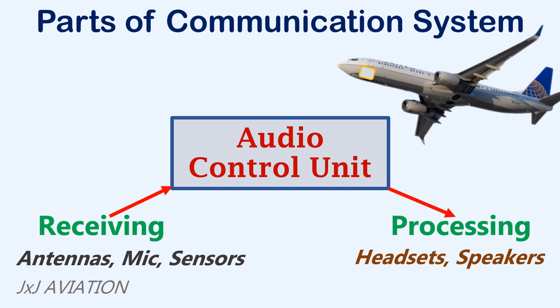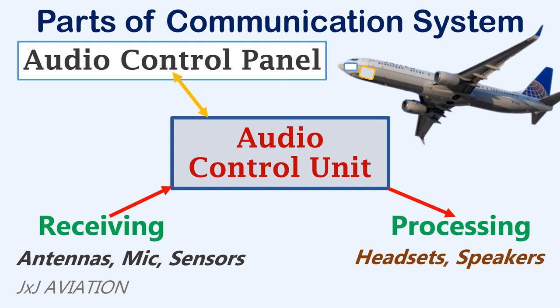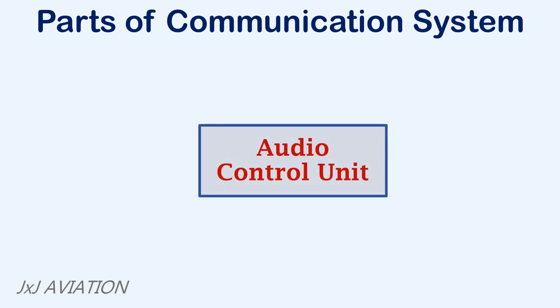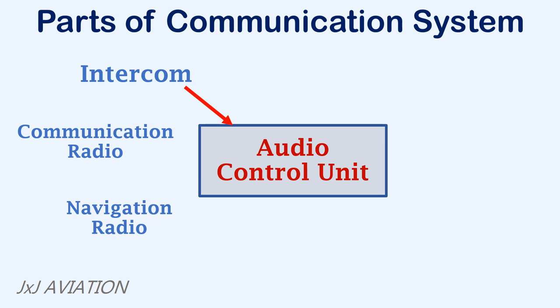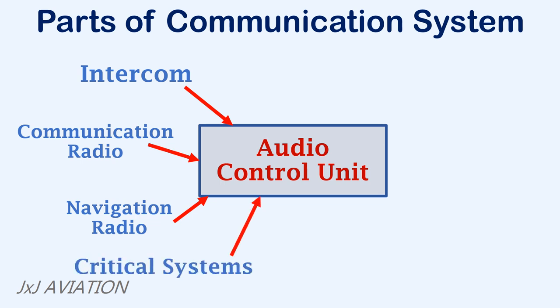In the cockpit, the crew can manage the audio control unit with the help of an audio control panel. This will have different switches and knobs to transmit or receive information. The audio control unit receives information from different sources such as the intercom that is used for internal communication. It will also receive audio information from the communication or navigation radio from the ground stations. It may also be linked to some critical systems in the aircraft in order to trigger onboard alerts in case of failures.